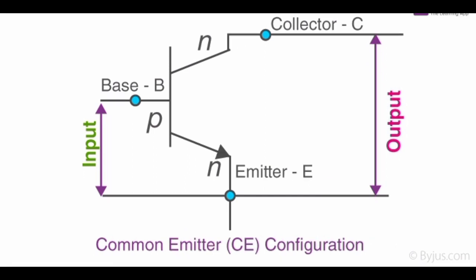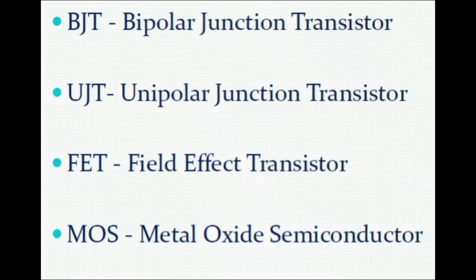This is CE type common emitter configuration. In CE type, we give input to the base and emitter of the transistor, and take output from the collector and emitter of the transistor.